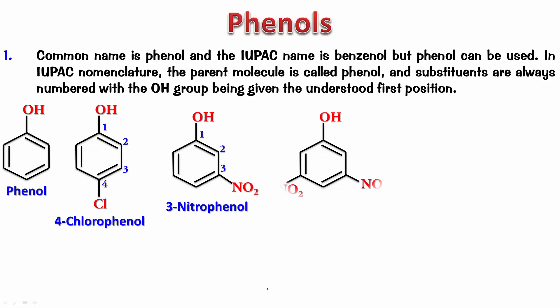What would be the name of this one? Pause, check, and then play it back. Numbering it 1, 2, 3, 4, 5 — so it's 3,5-dinitrophenol.